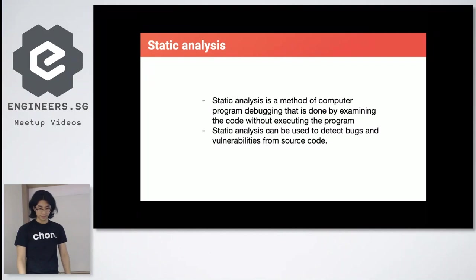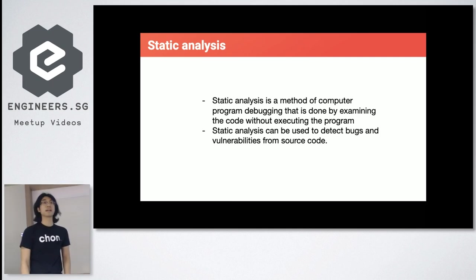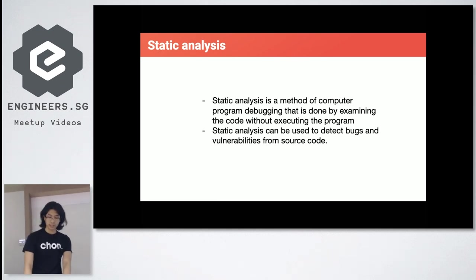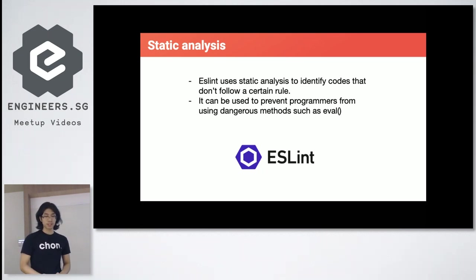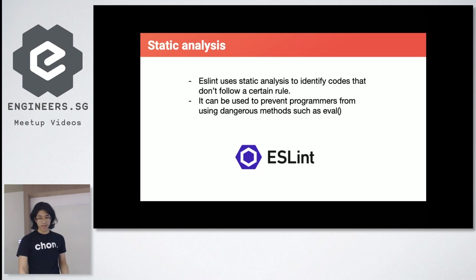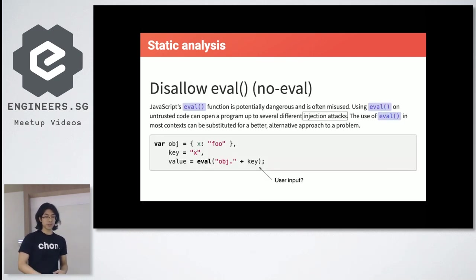Static analysis is a method of debugging based only on the code, and it can be used to detect bugs and vulnerabilities in a program. An example of a static analysis tool is ESLint — very familiar. ESLint uses static analysis to enforce rules you've defined, and it can also detect vulnerabilities because there are ESLint rules that cover security.